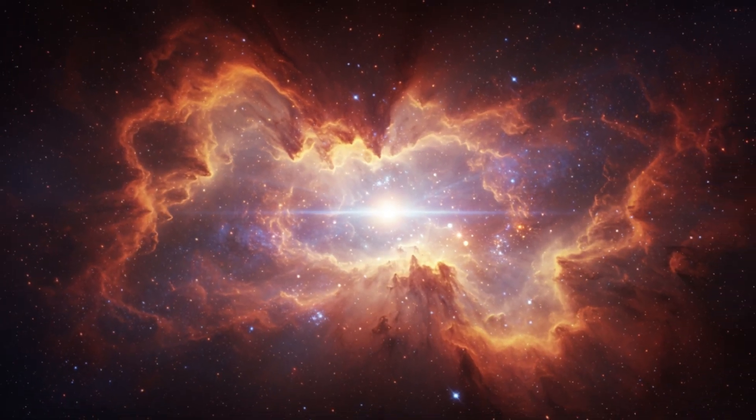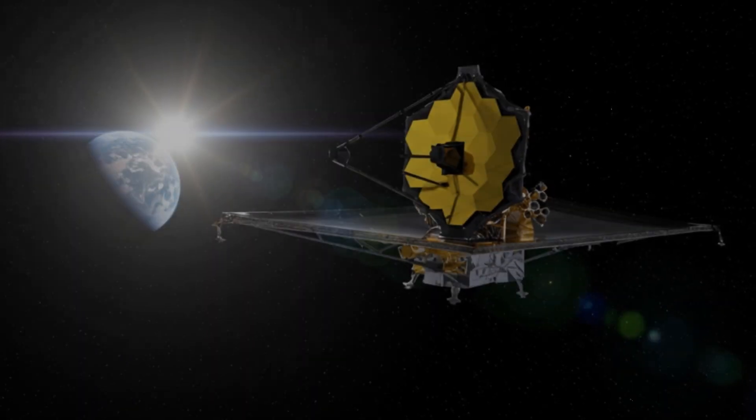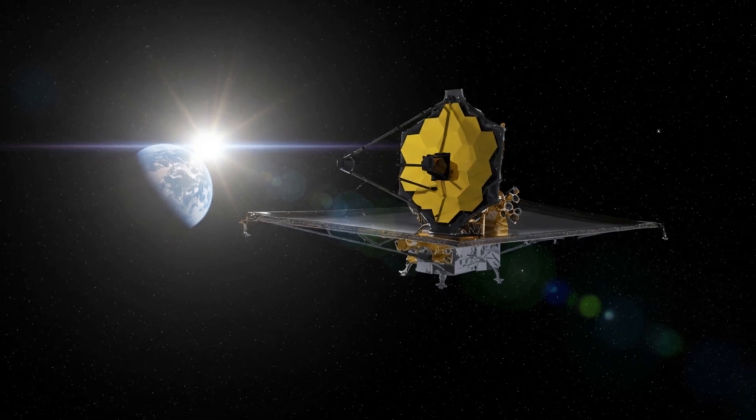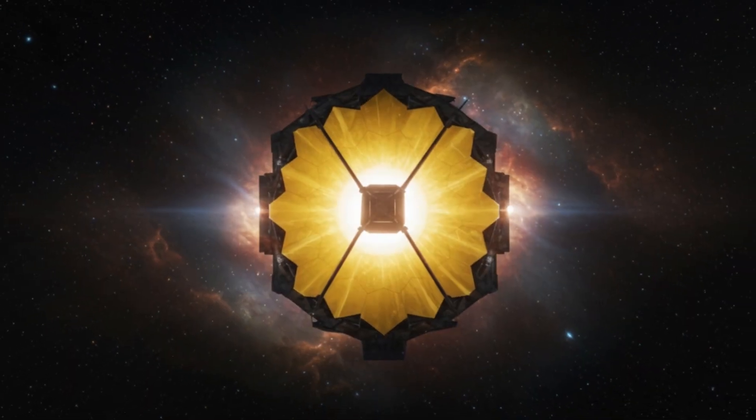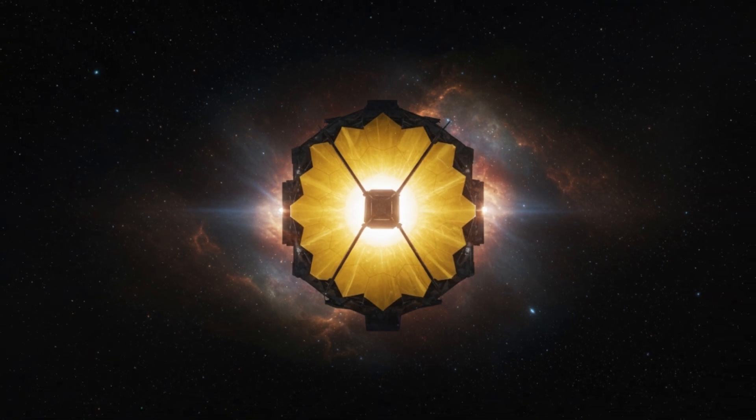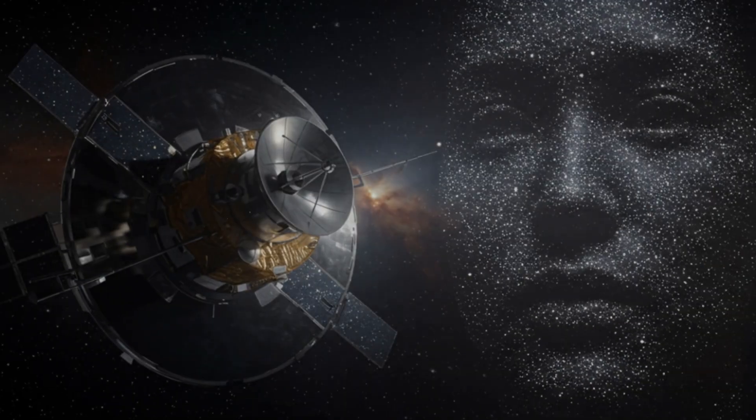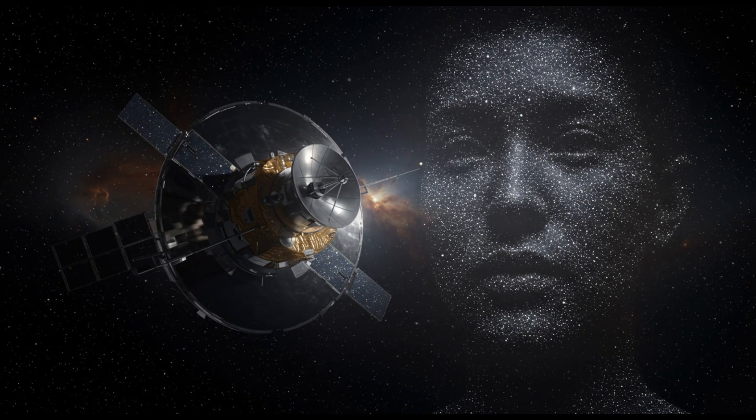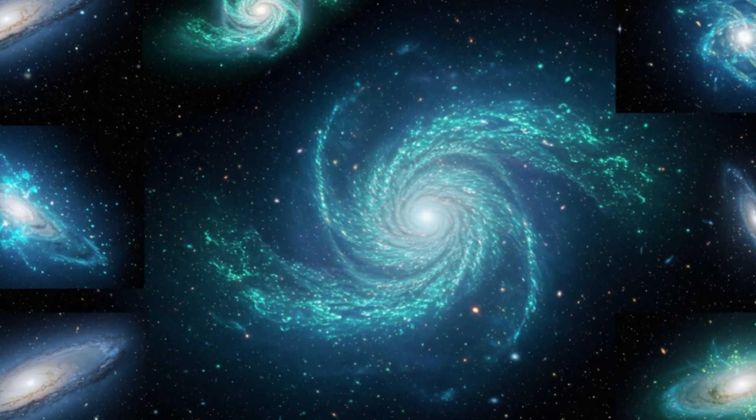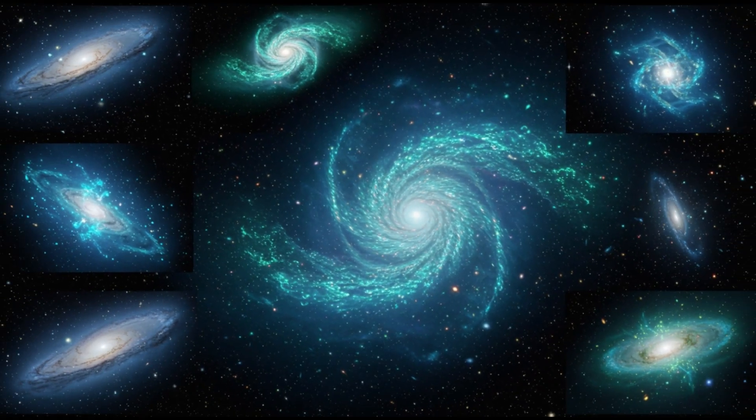The James Webb Space Telescope was built to be our ultimate eye, a 6.5-meter golden mirror tuned to catch the faintest whispers of light from the dawn of time. It was supposed to show us the first stars, the earliest galaxies, the soft glow of creation itself. But instead, it found a problem.